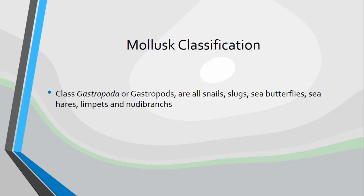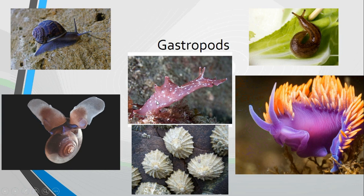Mollusk classification: our first class is going to be class Gastropoda, or the gastropods. They are all the snails, slugs, sea butterflies, sea hares, limpets, and animals called nudibranchs. So let's go ahead and take a look at some of them.